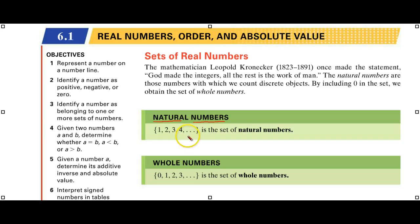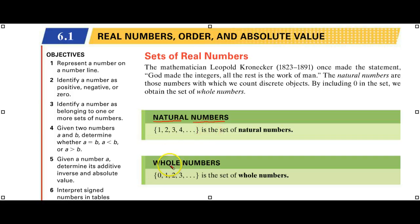They also called it listing notation, and that's okay too. Now, if we add a zero to the natural numbers, we get our next set of numbers, which are the whole numbers.